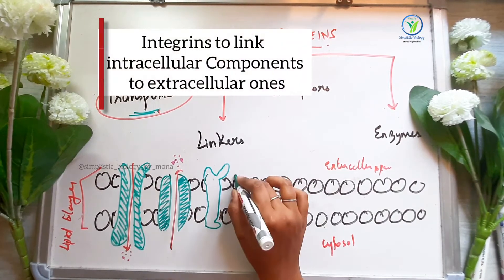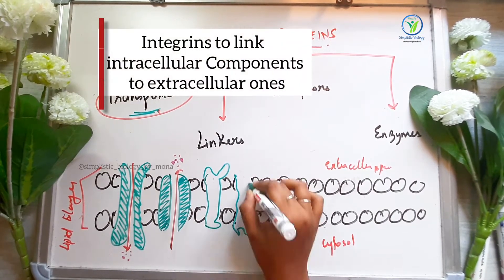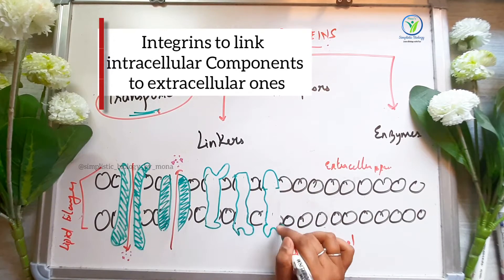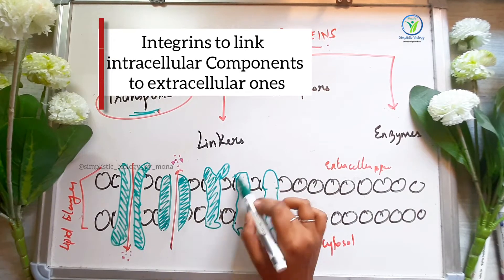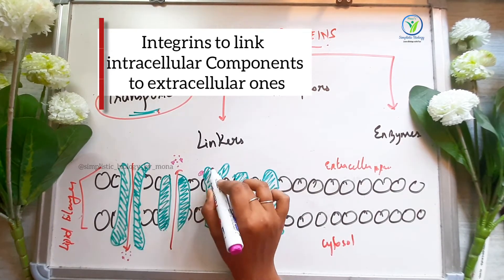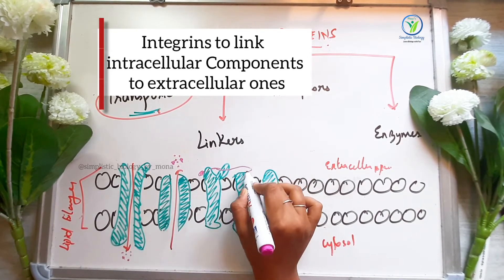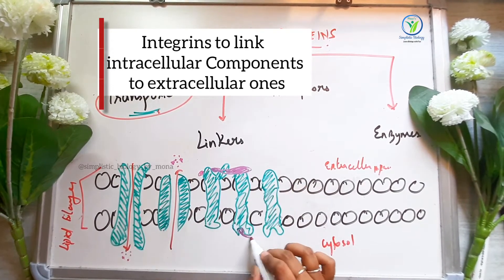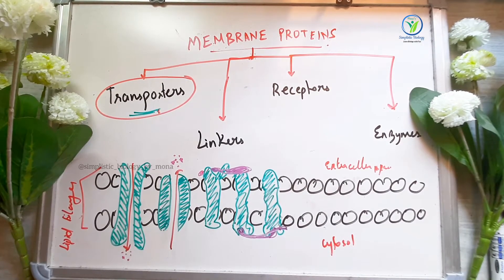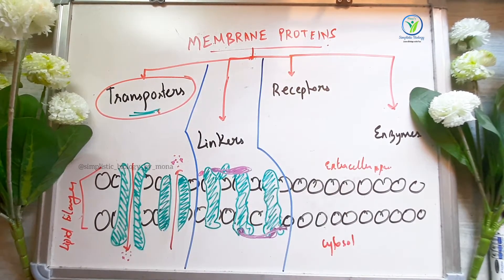Next, the linkers. In these proteins, we have integrins. What they do is link intracellular components to extracellular components. It is a type of protein that links these components together — this type of linkage is called a linker.